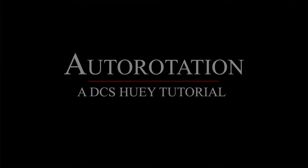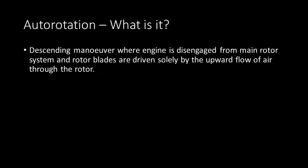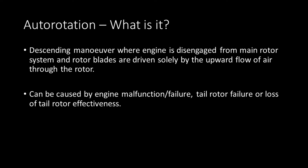Today's video is about Auto-Rotation with the DCS UH. What is Auto-Rotation? It's not that complicated. It's a flight state — a descending maneuver where you have engine loss of power. Your engine is disengaged from the main rotor system, and your rotor blades are driven solely by the air flowing upwards through the rotor. It can be caused by engine failure, tail rotor failure, or loss of effectiveness of the tail rotor.